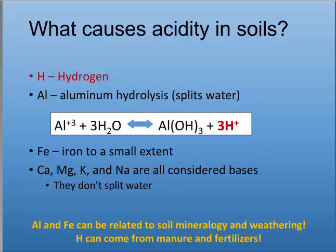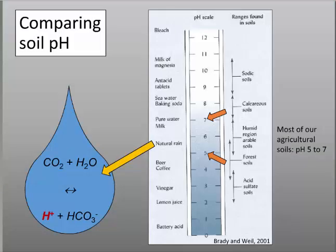In soils, what causes acidity? Hydrogen is the acid, but elements like aluminum can actually split water when free and create acidity. On a soil test report, you might see aluminum listed as an acid — it itself isn't acidic, but it creates acidity in your soil. Soils higher in clay and older red-looking soils can have more acidity. The elements calcium, magnesium, potassium, and sodium are called base cations, and they don't split water, so they're listed as bases on your soil test report.